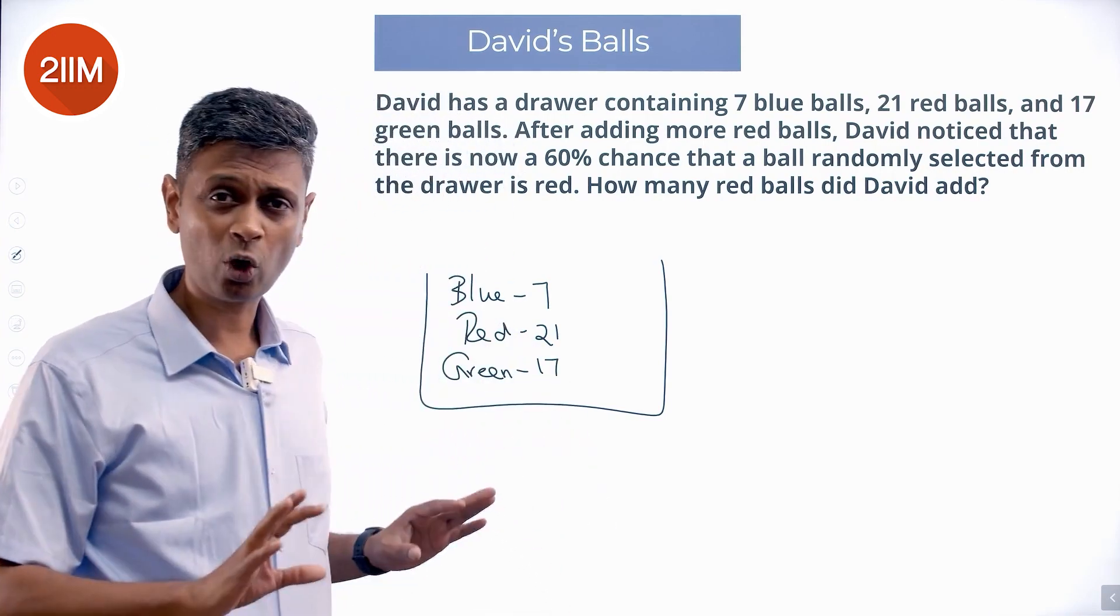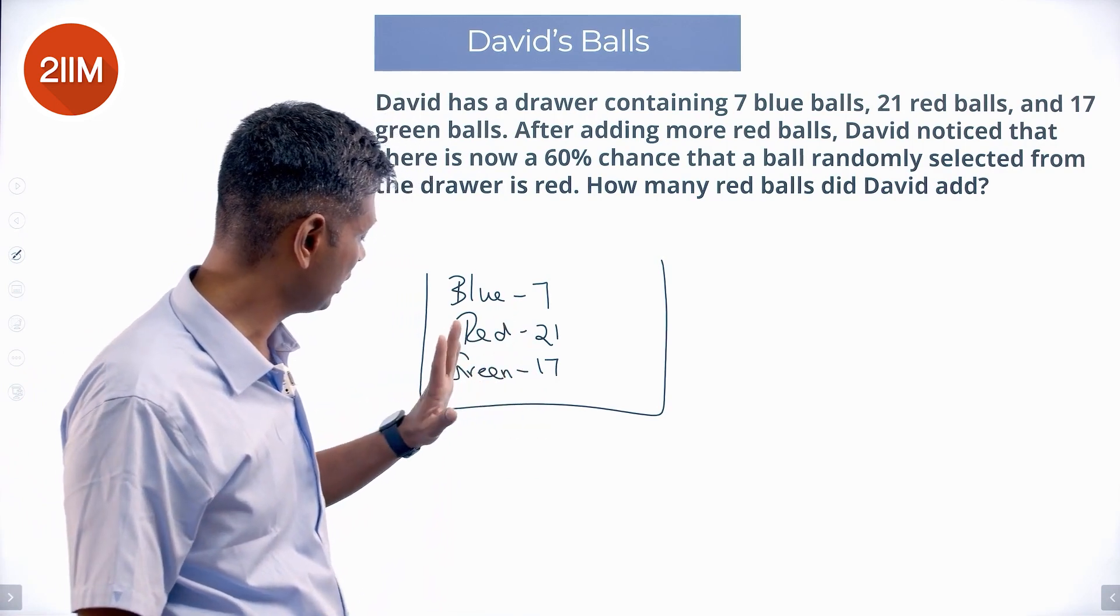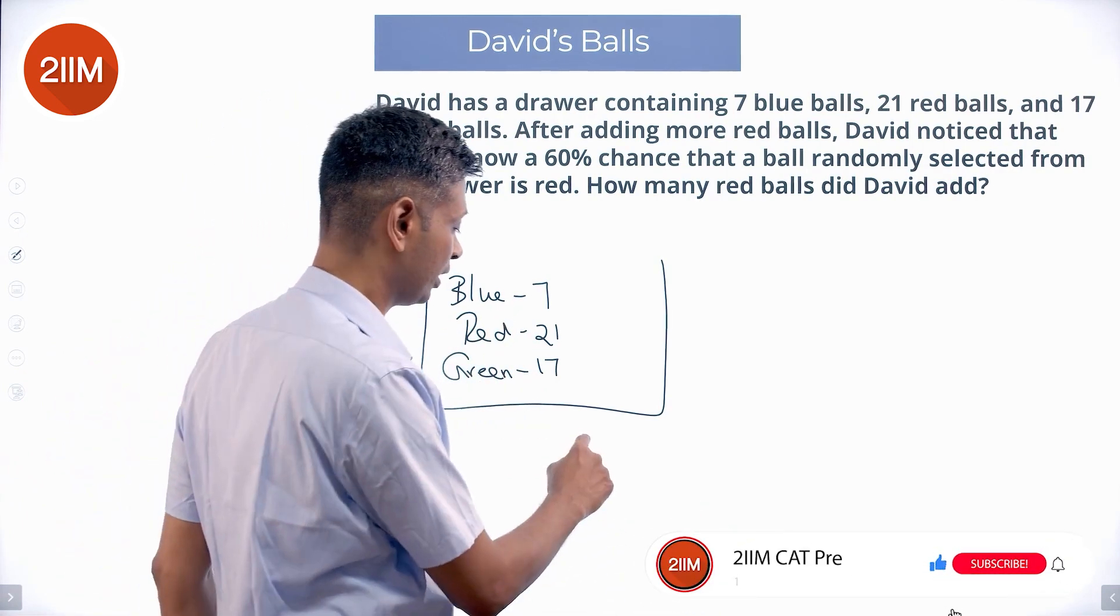So, now first let's think about how many are there. 7 plus 21, 28, 17, 45 balls are there totally.